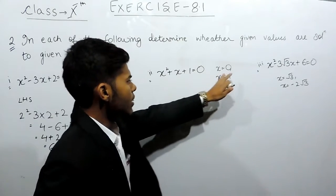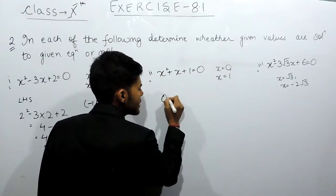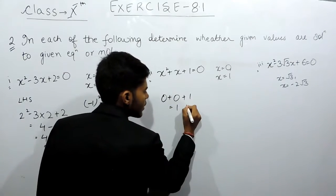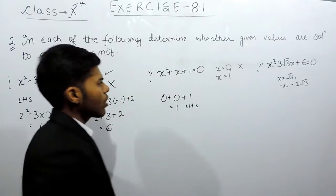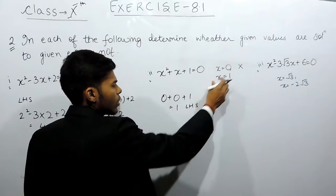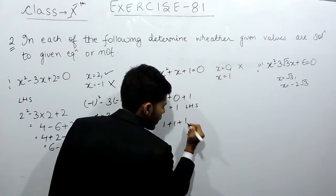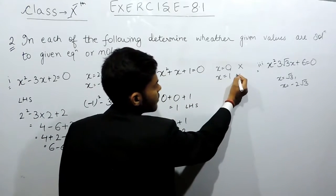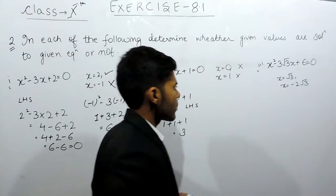Coming to part 2, keeping x equals to 0: it will be 0 plus 0 plus 1, which equals 1. The left hand side is not equal to the right hand side, so this given value is not a root of this quadratic equation. Now keeping x equals to 1: 1 plus 1 plus 1 equals 3, which is again not equal to 0. So this value is also not a root of this quadratic equation.